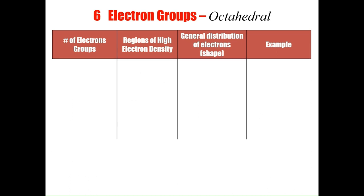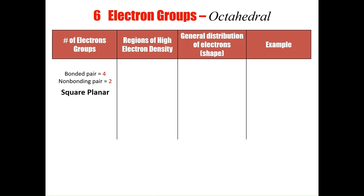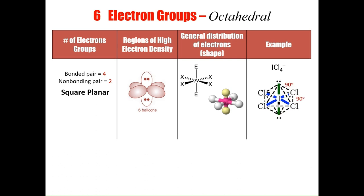The last shape with six electron groups has four bonding and two non-bonding groups, giving the molecule a flat square shape — called square planar. The two lone pairs point in opposite directions causing the bonding pairs to take on this planar shape. An example is the tetrachloroiodine ion, with 90 degrees between the non-bonding pairs and the bonding pairs, and 90 degrees between all bonding pairs, because both lone pairs repel each other and the bonding pairs with exactly equal force.